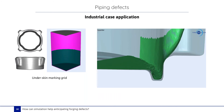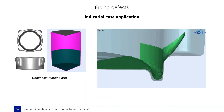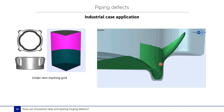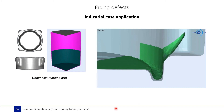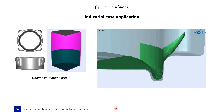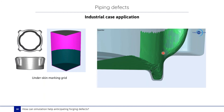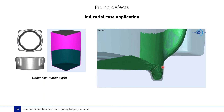Here is another industrial case where we detect the piping defect. The piping defect has been detected, as we see in this image, by using the under-skin marking grid. In green, we see the marking grid that was defined in the simulation, and we can see the occurrence of the piping defect in this zone.